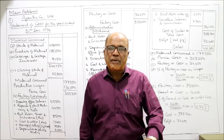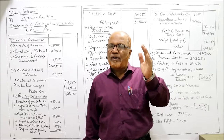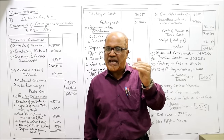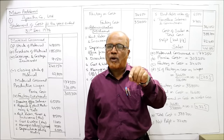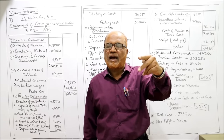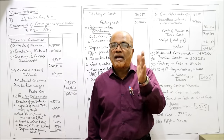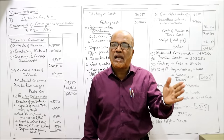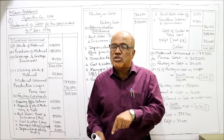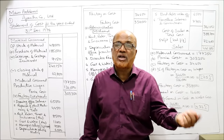The new point in this problem is that you have to decide which item should be taken under which head. Some principles are given for making the cost sheet. First we find prime cost, which consists of direct material, direct wages, and direct expenses. Then we have factory overhead, administration overhead, and selling and distribution overhead — three overheads. The problem has not specified which item should be taken under which head, so we have to decide.